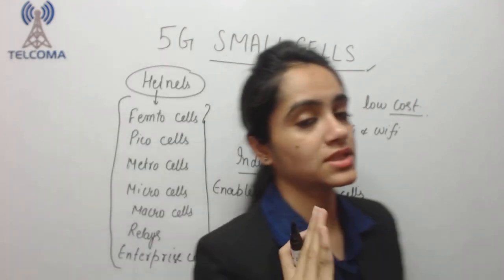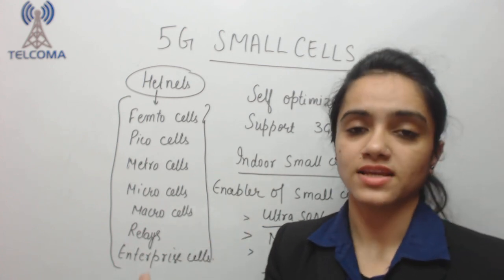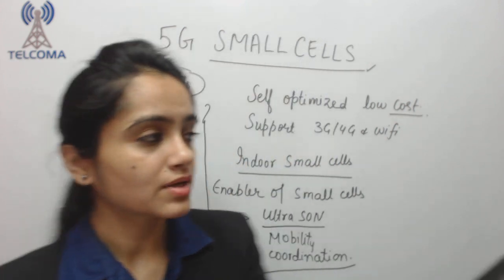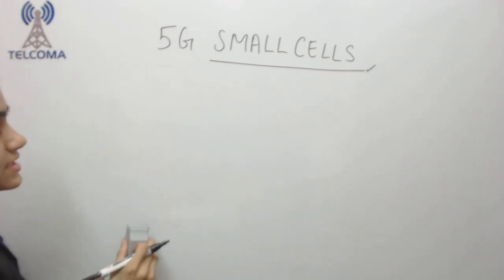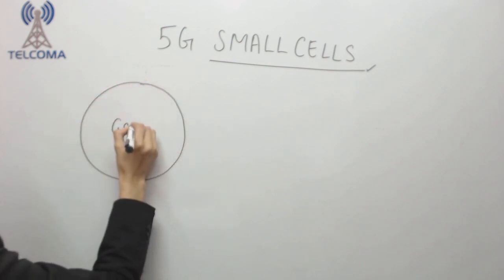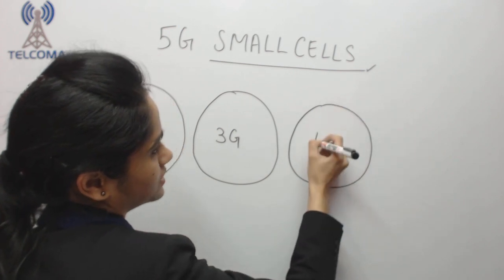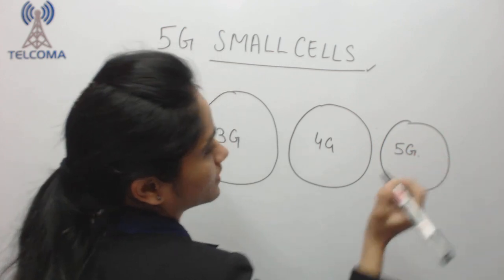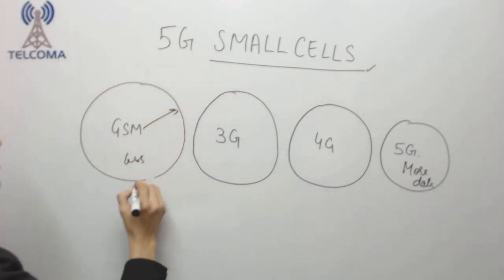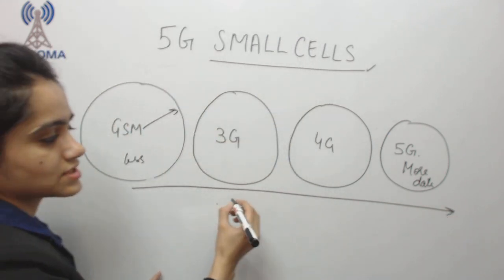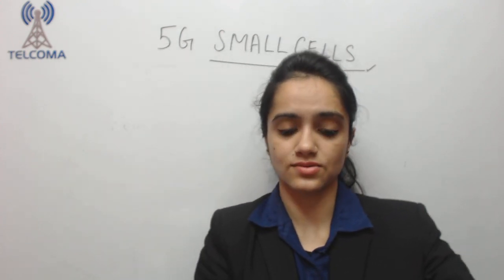We are using different types of cells based on the area, traffic demand, and number of users, in order to save cost and energy by reducing cell size. If I compare across generations: GSM cell radius is large, 3G cell radius is smaller because data rate is a factor, and in 5G the cell radius will be even shorter due to higher data demands. Cell size keeps decreasing as we move to newer generations, because cost efficiency, power efficiency, and spectrum efficiency are the deciding factors for cell radius. This concludes the topic of 5G small cells.